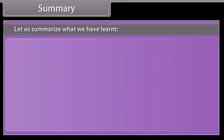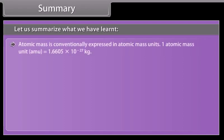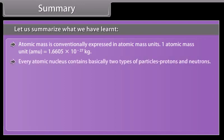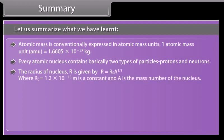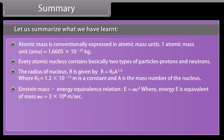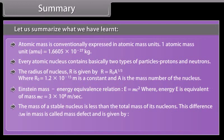Let us summarize what we have learned. Atomic mass is conventionally expressed in atomic mass units. One atomic mass unit or AMU is equal to 1.6605 into 10 raised to the power minus 27 kilogram. Atomic nucleus contains basically two types of particles, protons and neutrons. The radius of nucleus R is given by R equals R not A to the one-third, where R not is equal to 1.2 into 10 raised to the power minus 15 M is a constant, and A is the mass number of the nucleus. Einstein mass energy equivalence relation E equals MC squared, where energy E is equivalent of mass M, C is the velocity of light in vacuum, that is 3 into 10 raised to the power 8 meter per second. The mass of a stable nucleus is less than the total mass of its nucleons. This difference delta M in mass is called mass defect.